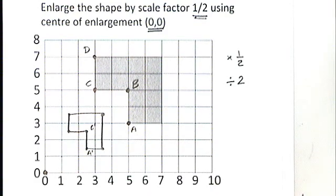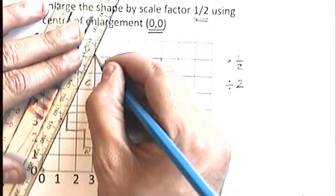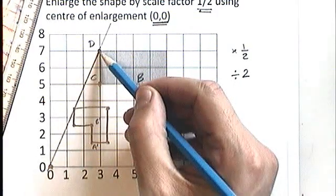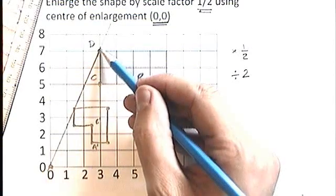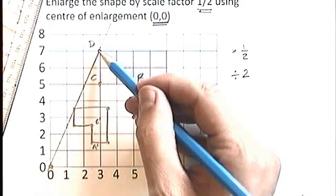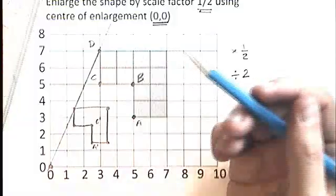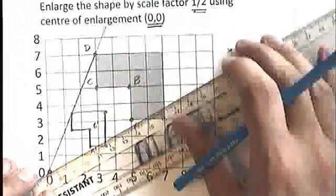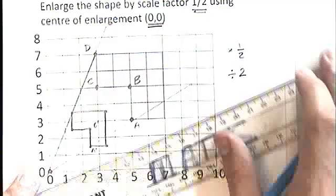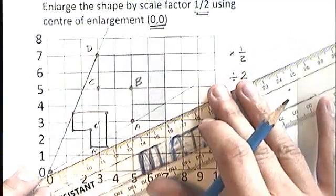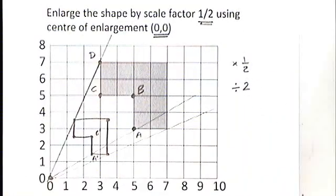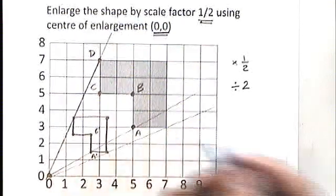One thing that might be handy might be using some straight lines to make sure that your points are in the right place. If I'm going to half the distance of D from the center of enlargement, it needs to be on the same straight line down here. That's halfway from that point, the center of enlargement, to D. And similarly, all of the other ones should be on a straight line. So if we look at A and A dashed, they're on a straight line. If we look at these two corners here, which I haven't labelled, that straight line should also pass through the center of enlargement. So try putting a few lines on just to check that your points are on the corresponding lines.